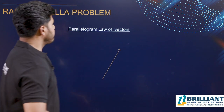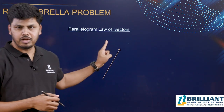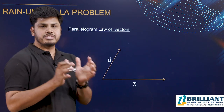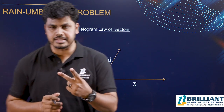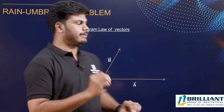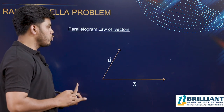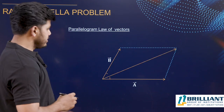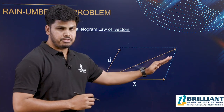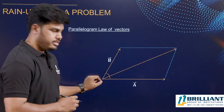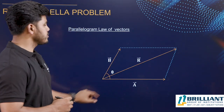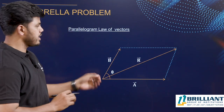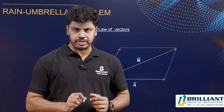What do we mean by resultant of two vectors? From the parallelogram law of vectors, if you have two co-initial vectors a and b assumed as two adjacent sides of a parallelogram, then the resultant of these two vectors is given by the diagonal of the parallelogram starting from the common point. That vector r represents the resultant of vectors a and b — that is the parallelogram law of vectors.